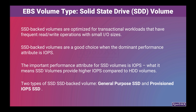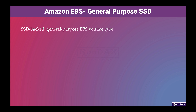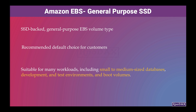General-purpose SSD is the SSD-backed general-purpose EBS volume type and is the recommended default choice for AWS customers. They are suitable for many workloads, including small to medium-sized databases, development and test environments, and boot volumes.